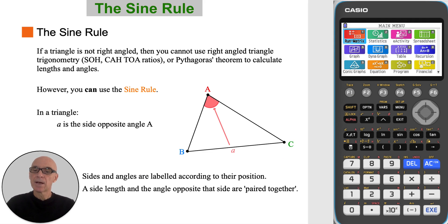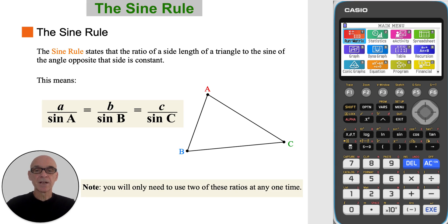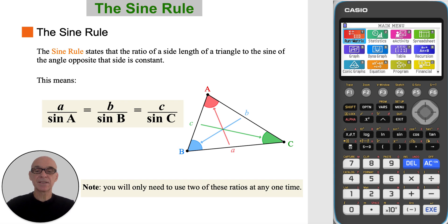In a triangle, A is the side opposite angle A, B is the side opposite angle B, and C is the side opposite angle C. Sides and angles are labelled according to their position — a side length and the angle opposite that side are paired together. The sine rule states that the ratio of a side length of a triangle to the sine of the angle opposite that side is constant. This means that A divided by sine A is equal to B divided by sine B is equal to C divided by sine C. You will only need to use two of these ratios at any one time.